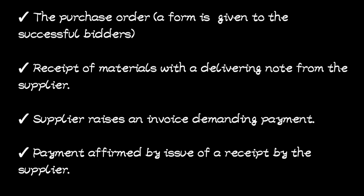After that, the supplier will raise an invoice demanding payment. The invoice includes the quantity, unit costs, total cost, transport charges, and any discount allowed. Once the invoice is raised, the business pays the supplier, and payment is confirmed by the supplier issuing a receipt — confirming that payment has been made. That completes the materials purchase procedure.